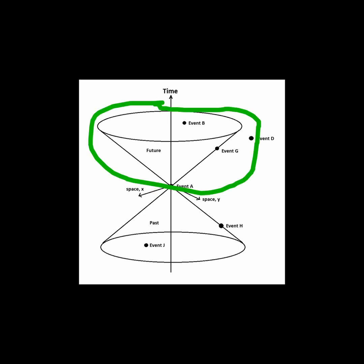The light cone has a future portion at the top, which shows what influence event A can have in the future in spacetime. It can influence what happens at event B, since event B is in the future light cone. Event A can also reach the event G with no time to spare, since that requires exactly the speed of light to make it on time.